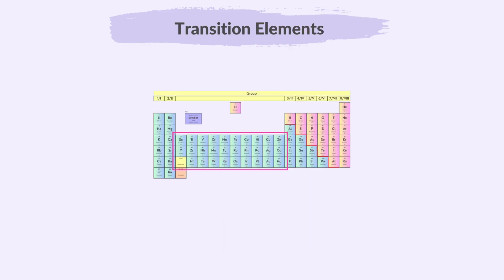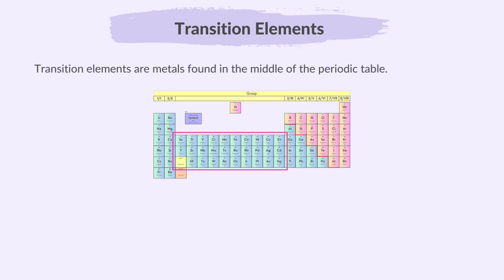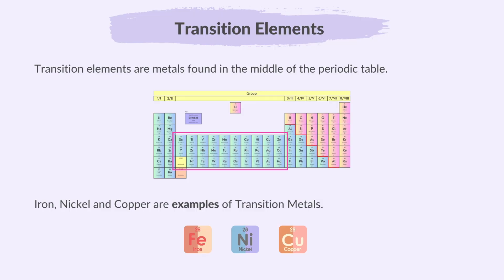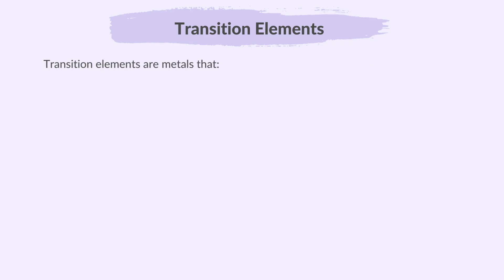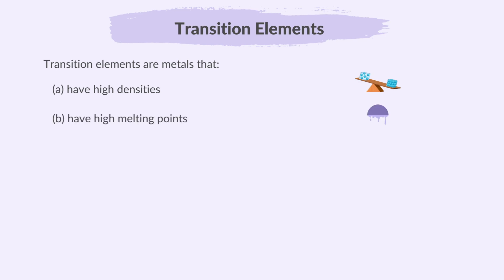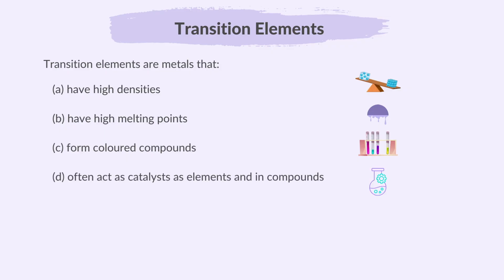Next, let's dive into transition elements. Transition elements are metals found in the middle of the periodic table. Iron, nickel and copper are examples of transition metals. Transition elements are metals that have high densities, have high melting points, form coloured compounds and often act as catalysts, as elements and in compounds.